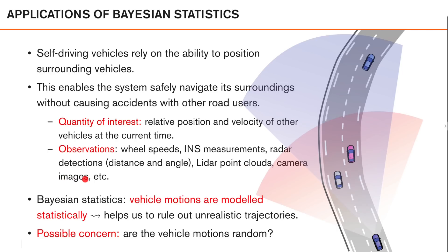One aspect I would like to highlight with this application is that, based on statistics, vehicle motions are modeled stochastically. That is, we describe likely movements of the vehicles using stochastic models, which helps us rule out unrealistic trajectories. In a Bayesian perspective, we would say that it's likely that this vehicle here moves something like this — that is, it is following the road more or less — and it's unlikely that it will make a sharp U-turn.